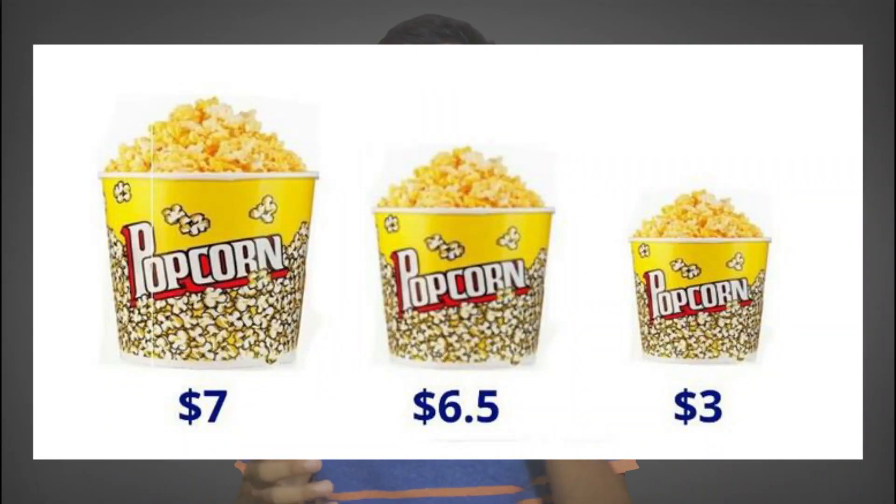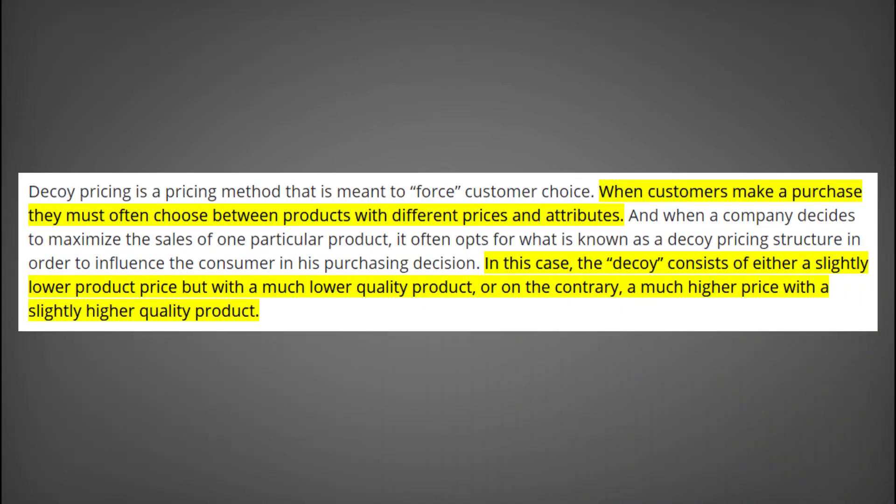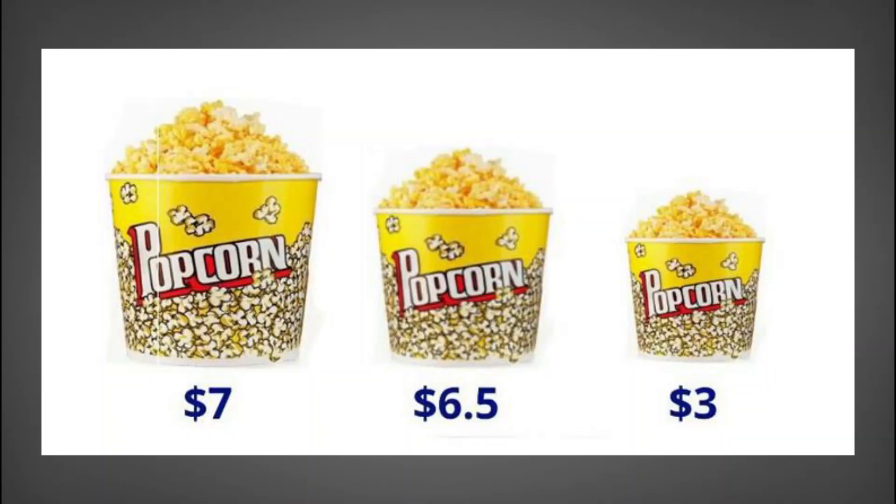By seeing this image, you compared the $6.50 product and the $7 product. Considering the size difference between both popcorns, you are hardly going to select the $6.50 product because its size is much smaller relative to the $7 product, which provides far more value. You might have seen this decoy effect in shopping malls and cinema theaters. Companies provide a decoy option so customers compare it with the more expensive option and mostly select the expensive one.